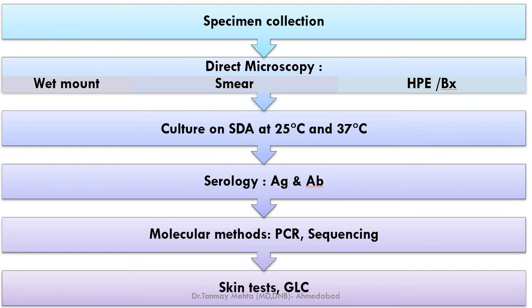After specimen collection, we do direct microscopy of whatever specimen we have collected — in the form of wet mount examination, smear preparation and examination, and histopathological or biopsy examination. Then we culture the sample on fungal culture medium, usually SDA (Sabouraud Dextrose Agar) at 25°C and 37°C. We also perform serological detection of antigen or antibody, molecular methods like PCR or sequencing, and additional methods like skin tests and gas-liquid chromatography.